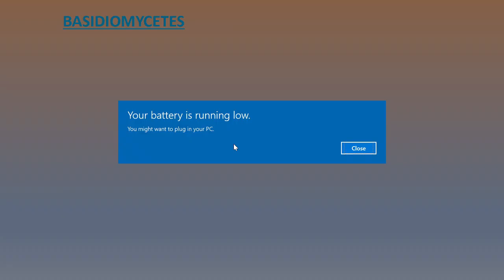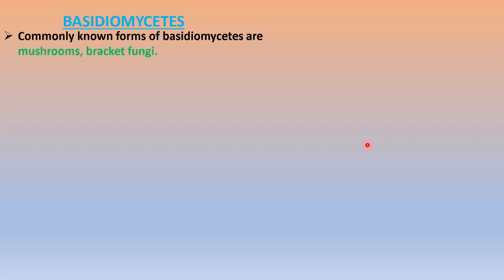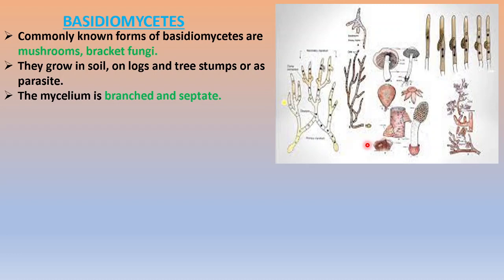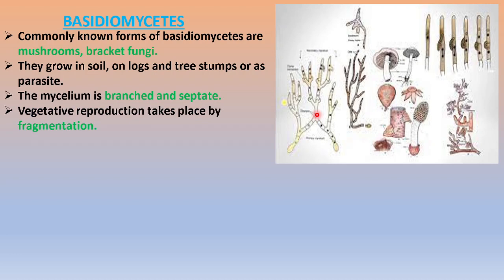Next, under kingdom fungi, we have Basidiomycetes. Basidiomycetes is commonly called mushrooms or bracket fungi. They grow on soil, logs, tree stems, or sometimes as a parasite. Usually they are found in soil or logs where they grow as saprophytes. The mycelium is again branched and septate, similar to Ascomycetes.